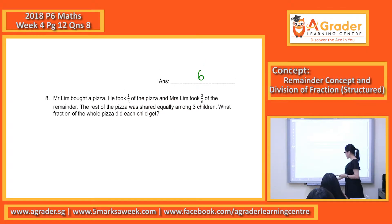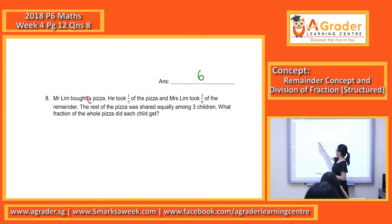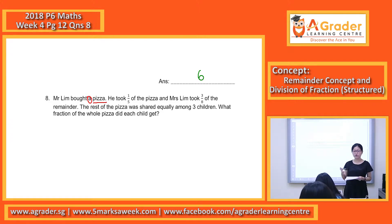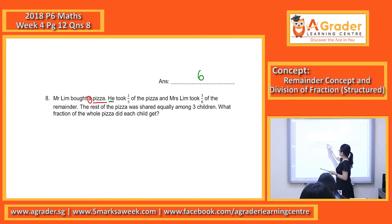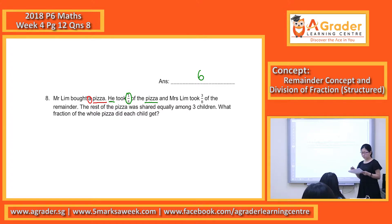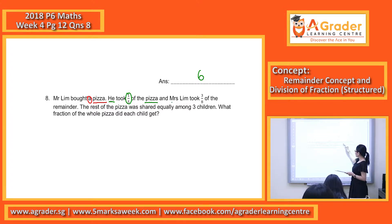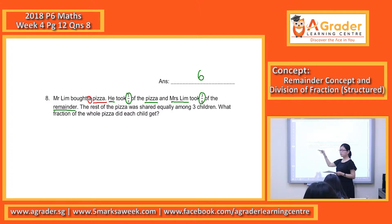Question 8. Mr. Lin bought a pizza — so that's one whole pizza. He took one-fifth of the pizza, and Mrs. Lin took three-eighths of the remainder.